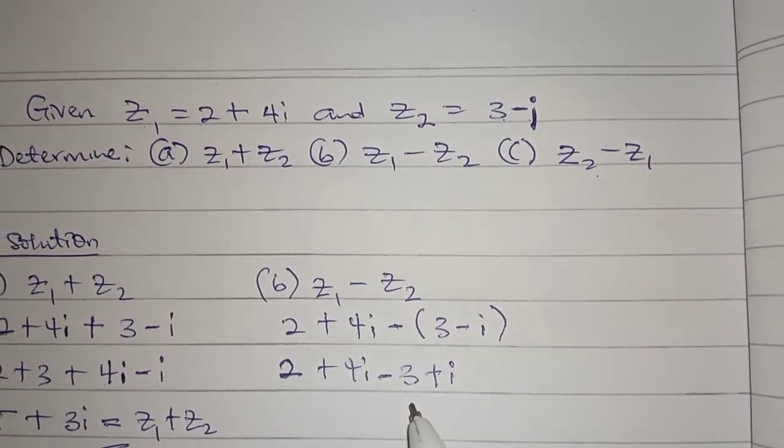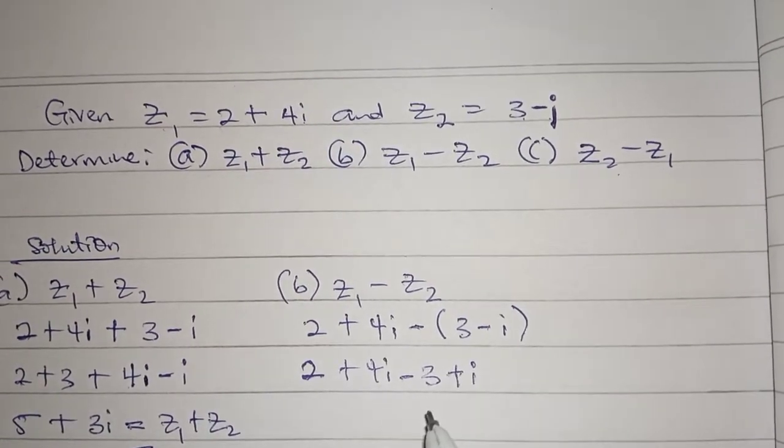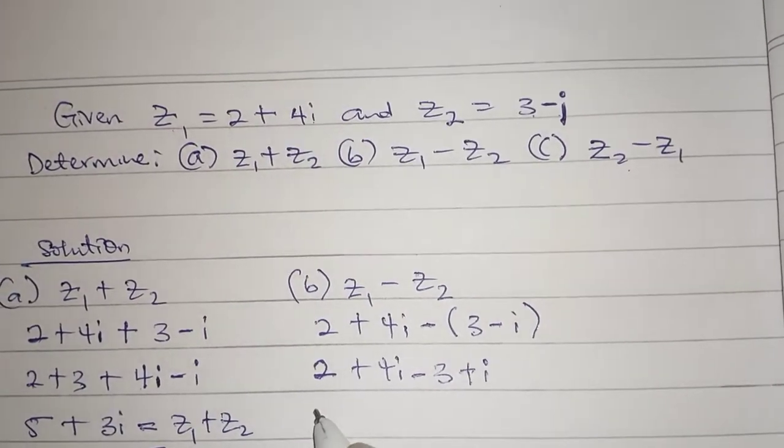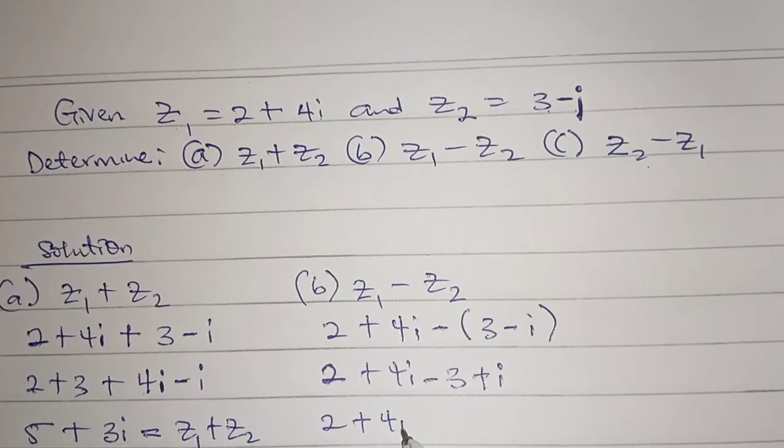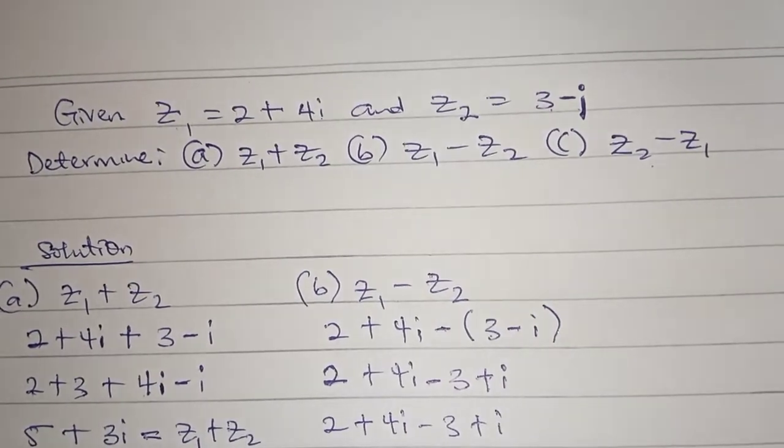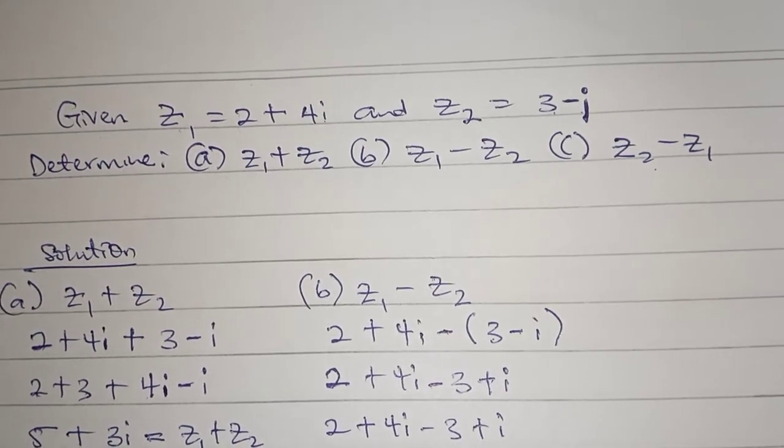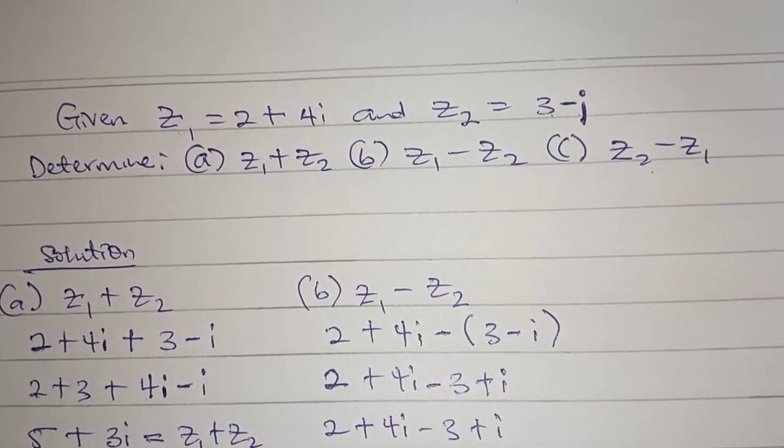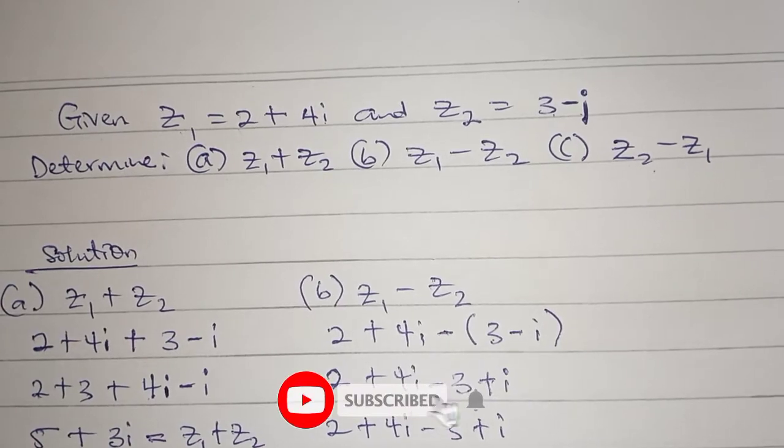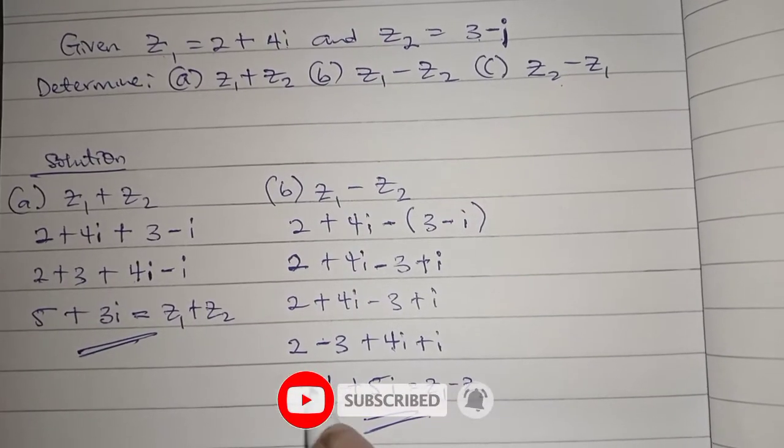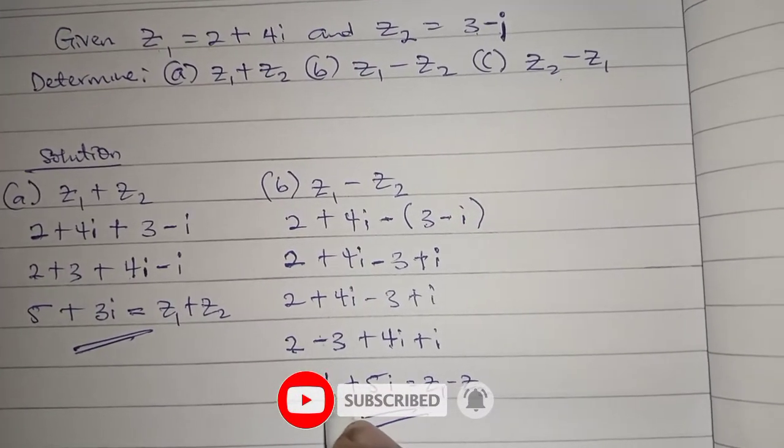So we have 2 plus 4i minus 3 plus i. Collecting like terms we have 2 minus 3 plus 4i plus i. So 2 minus 3 gives us minus 1, 4i plus i gives us 5i. This is how we get z1 minus z2.